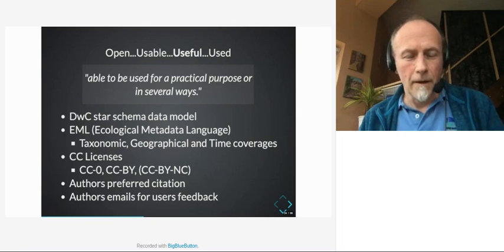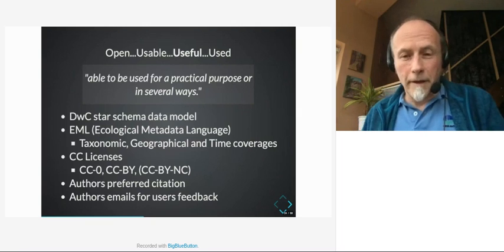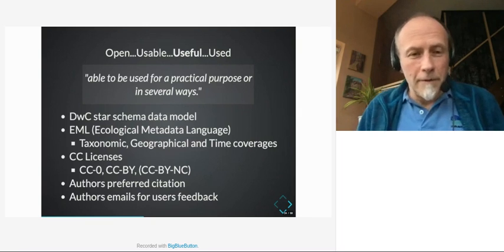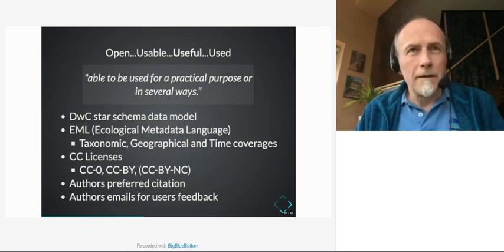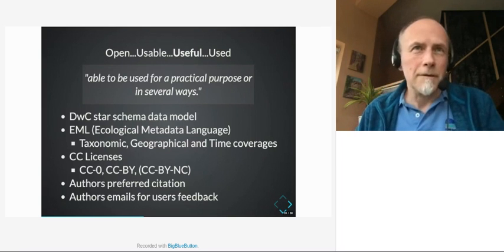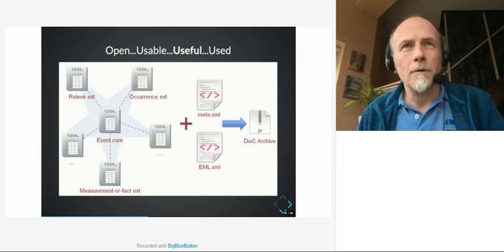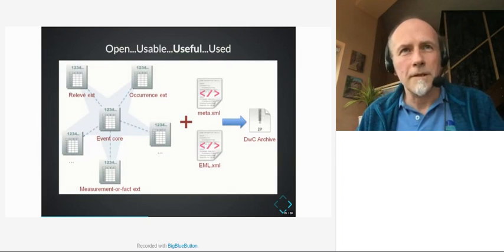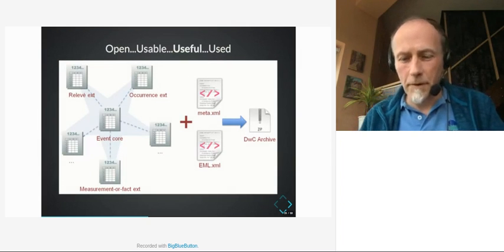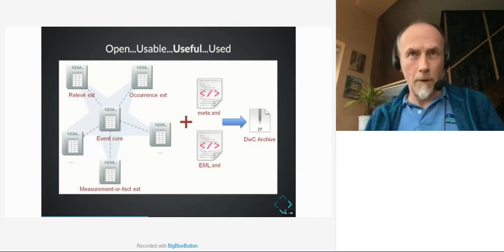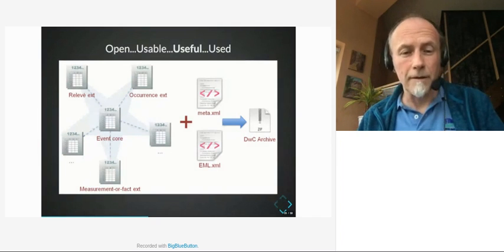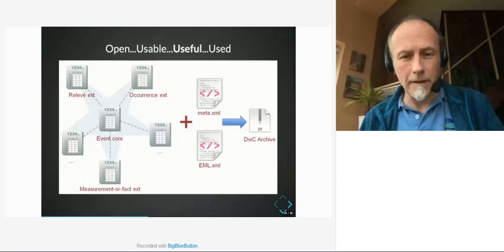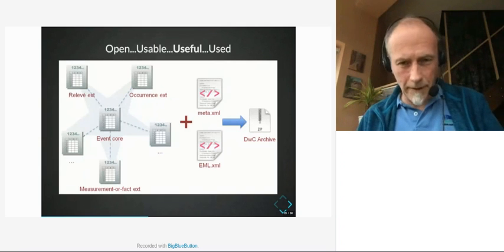A Darwin Core Archive is straightforward: it's a bundle of data files — the core plus occurrence extensions or measurement extensions, plus the EML metadata — and we zip all that together into a Darwin Core Archive.